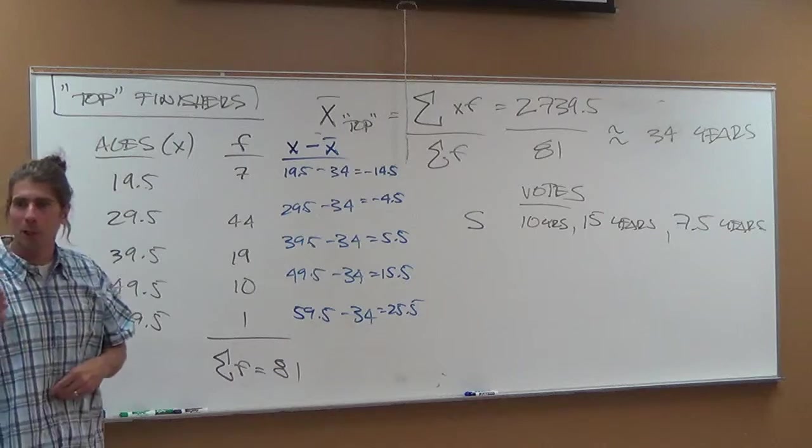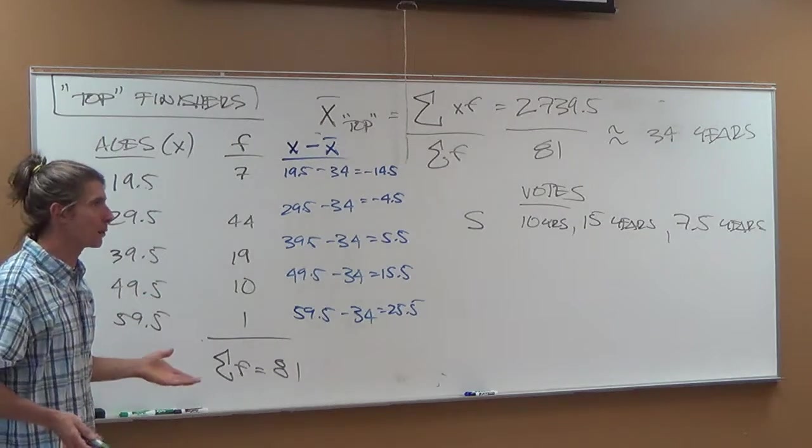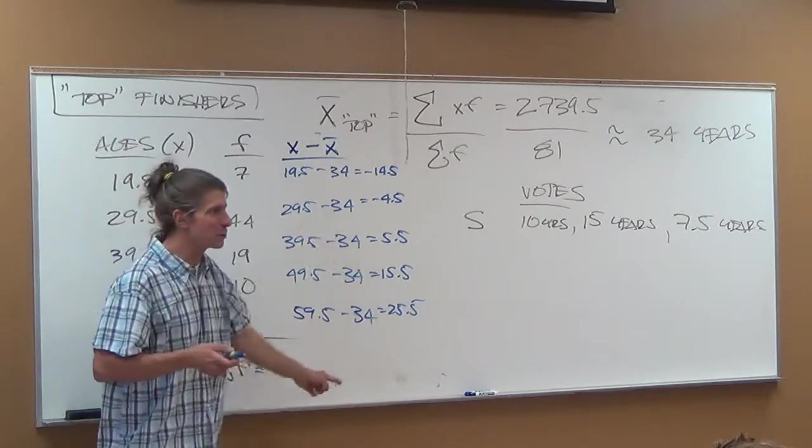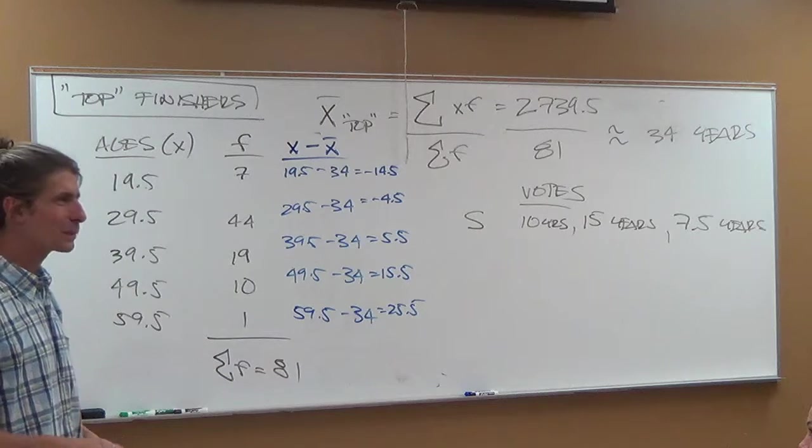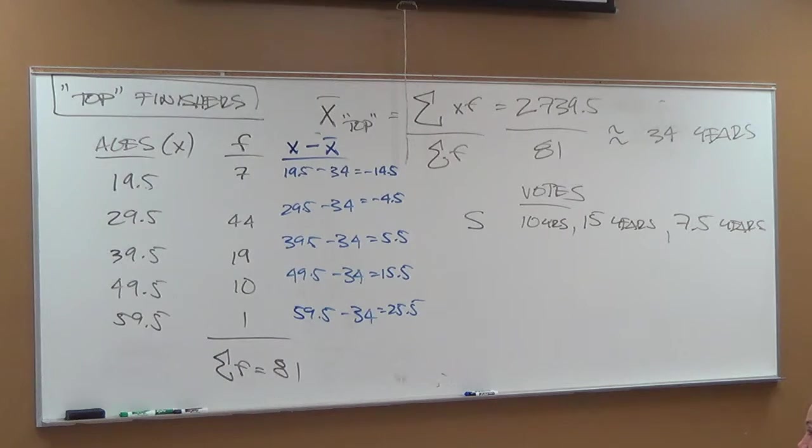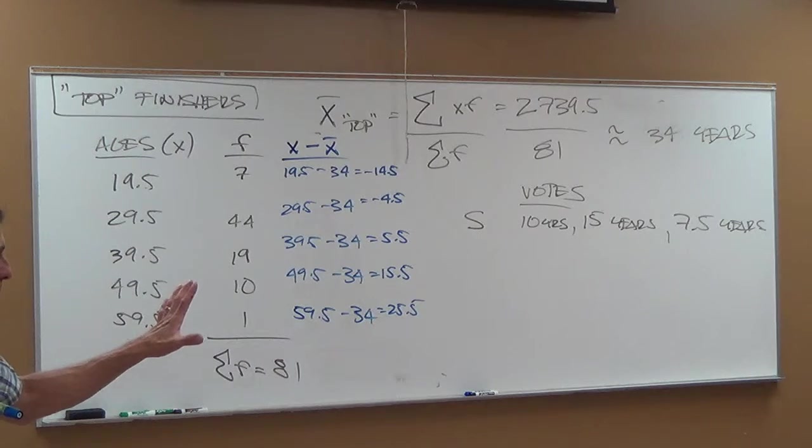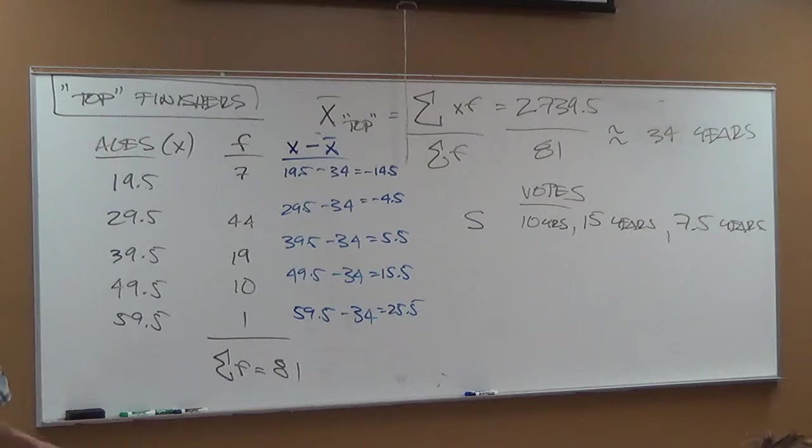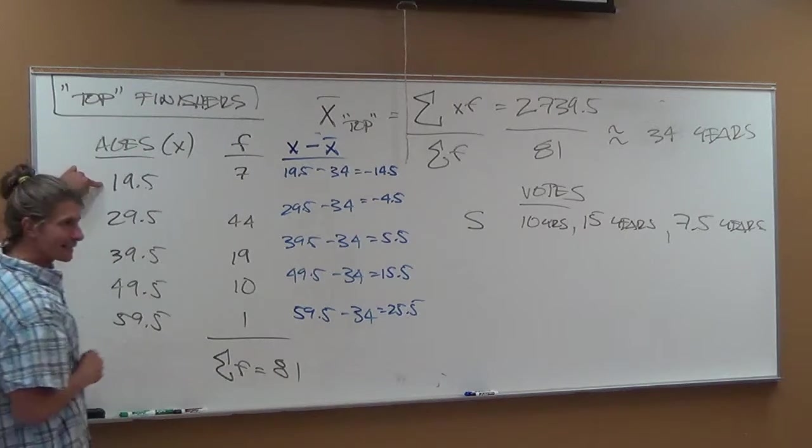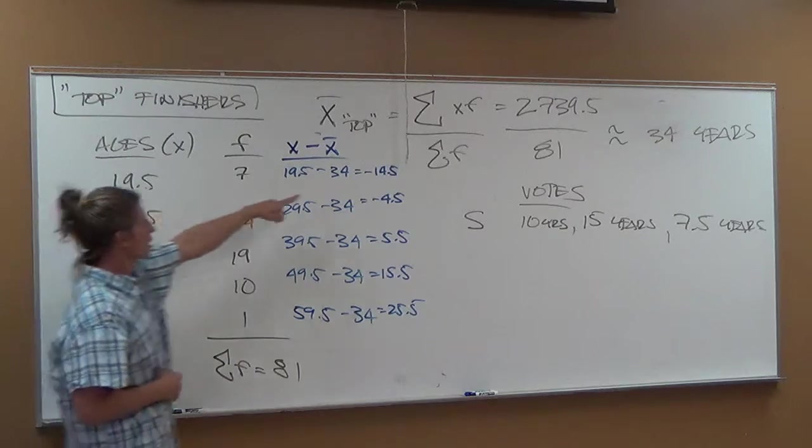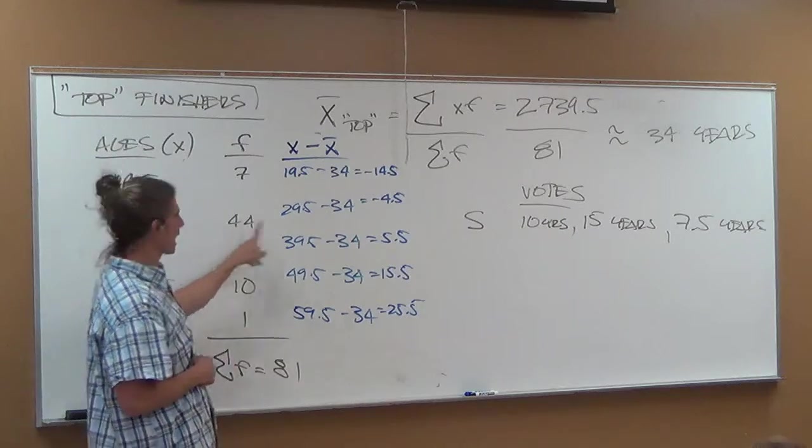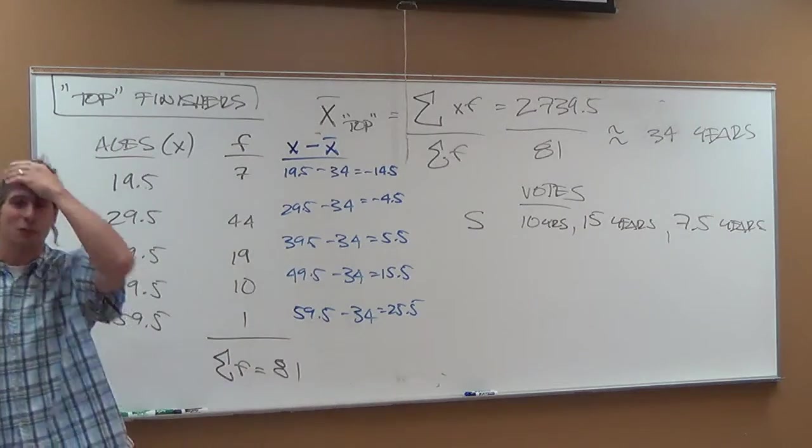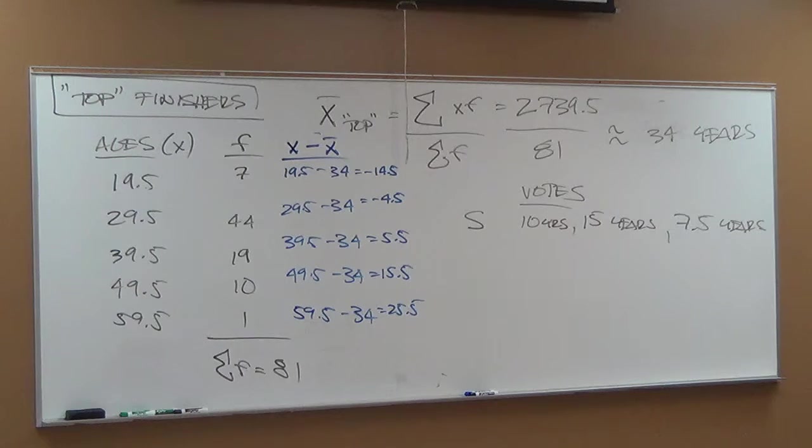Do you remember what happened with Bert's data when we got to this point a couple weeks ago? When we added this column, do you remember what happened? It zeroed out. Why doesn't this one zero out? Remember, Bert and Ernie's wasn't grouped. He only had five data points and we had five individual calculations. The problem is Bert and Ernie's weren't grouped. There aren't as many 19 year olds as there are 29 year olds, correct? There are negative 14.5 years difference, but that happened seven times. And this guy here happens 44 times and this guy here happens 19 times. You see what I'm saying? You have to account for all of that in the variance. The variance must be accounted for within that.